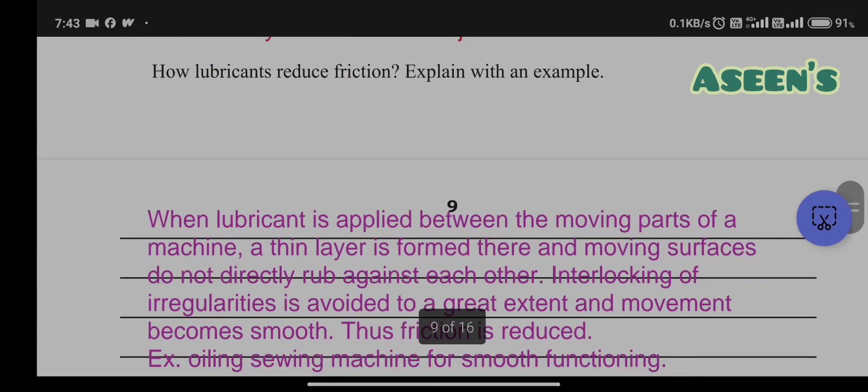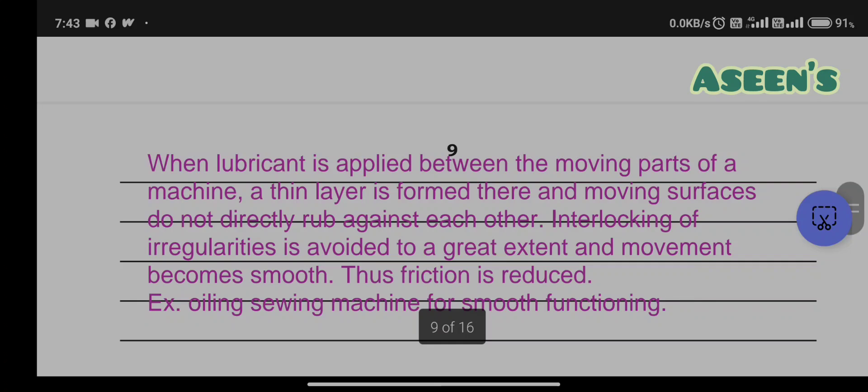The OR question: How do lubricants reduce friction? Explain with an example. When lubricant is applied between the moving parts of a machine, a thin layer is formed and moving surfaces do not directly rub against each other. Interlocking of irregularities is avoided, so the moving parts in your machines after oiling or adding lubricants are going to move smoothly. Thus friction is reduced. For example, oiling sewing machine for smooth functioning.